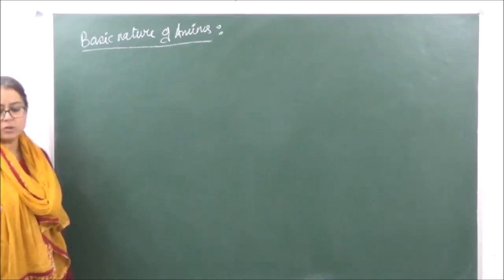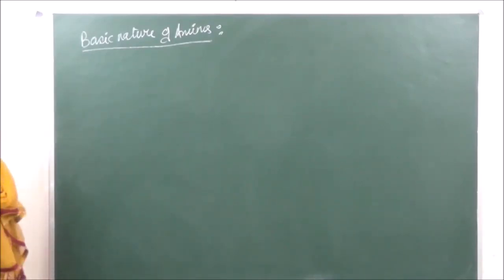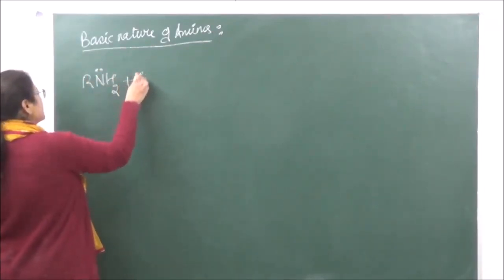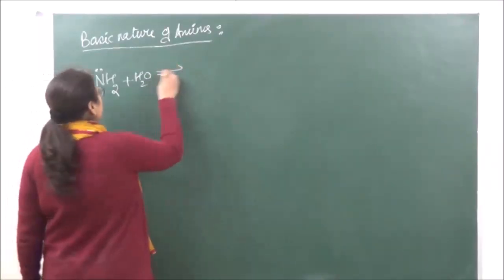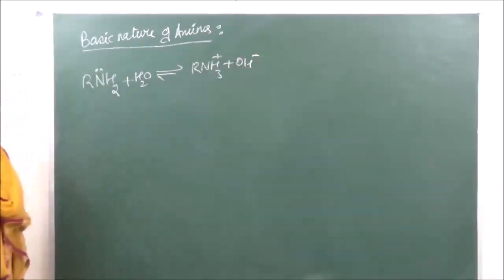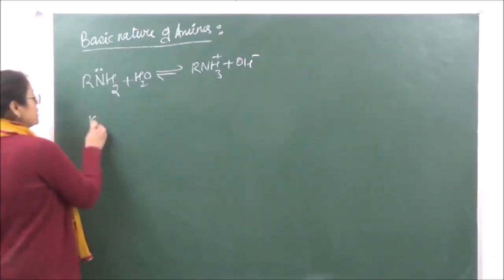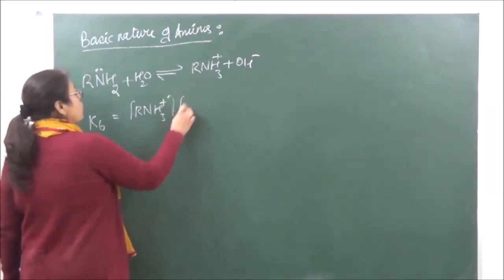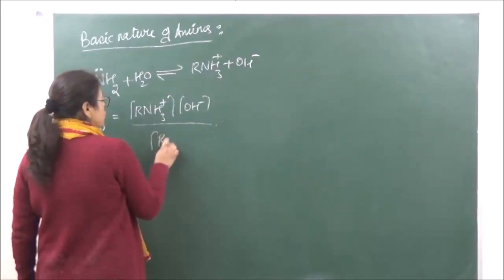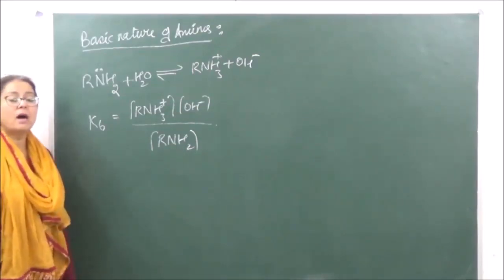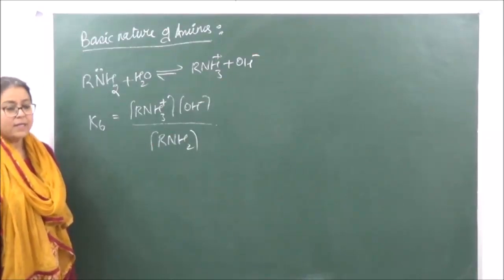Amines are weak bases — they react with water to give hydroxyl ions. So for an amine RNH₂ reacting with water, we get RNH₃⁺ plus OH⁻. Applying the law of mass action, Kb equals the concentration of RNH₃⁺ times concentration of OH⁻ divided by concentration of RNH₂. The concentration of water is taken as constant. Those with a higher value of Kb are going to be stronger bases.